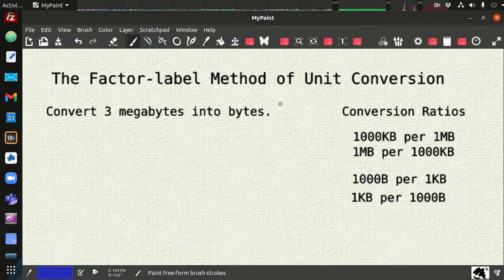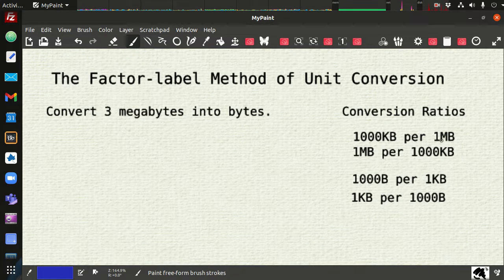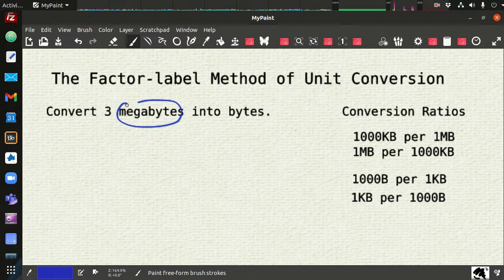This is an easier one. We're talking about megabytes into bytes. So the conversions, we have kilobytes to megabytes. There's a thousand kilobytes in one megabyte. So these are our equivalencies. And then we also have a thousand bytes per one kilobyte. So there's some way we can go from our starting point to our ending point.